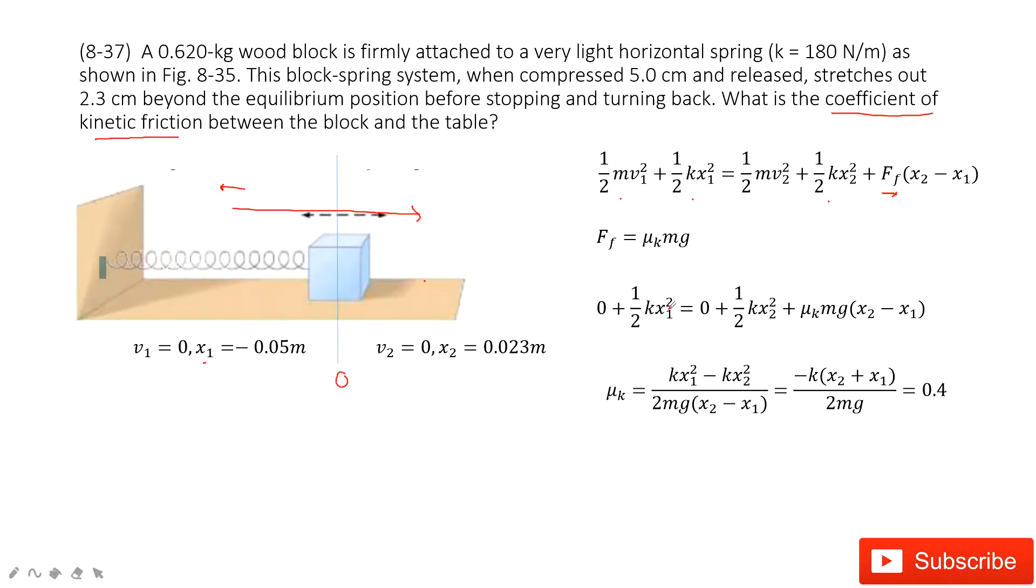Then we input the known quantities inside. You can see x1 is given, x2 is given, the k is given. Very easily you can find this μk equals 0.4. Thank you.